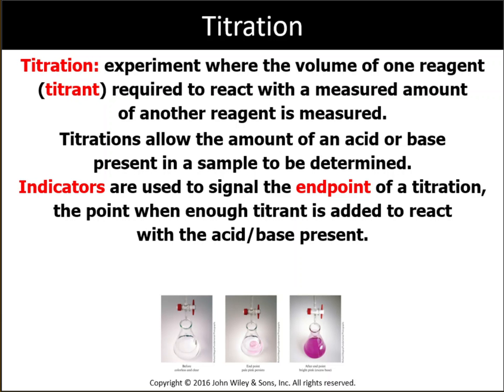Indicators are substances that don't participate in the reaction — they're just sensitive to pH. They change color at different pH values, and by looking at the indicator's color, we can monitor and tell which stage the reaction is at: is the acid completely neutralized, do we have excess acid, excess base, or is our solution completely neutral?